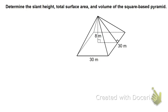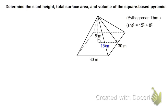Turning our attention to the little right triangle in the center of this figure, we need to figure out the slanted height using the Pythagorean theorem. If the entire side is 30 meters, then half of that gives the base of that triangle, which is 15 meters. So slant height squared equals 15 squared plus 8 squared. 15 squared is 225, 8 squared is 64. Adding together gives 289, and taking the square root gives a slant height of 17 meters.